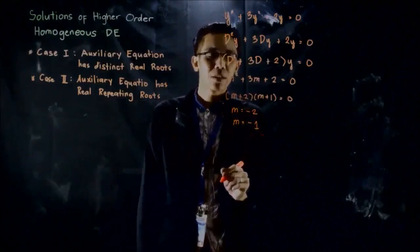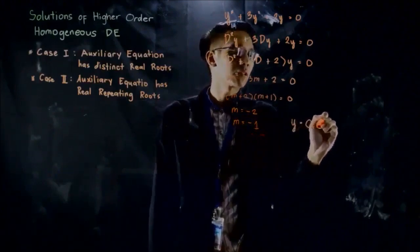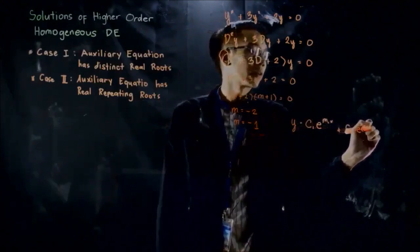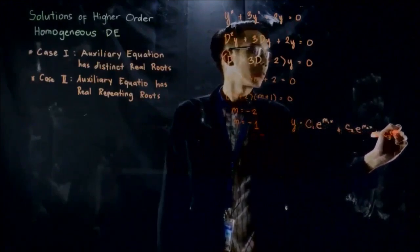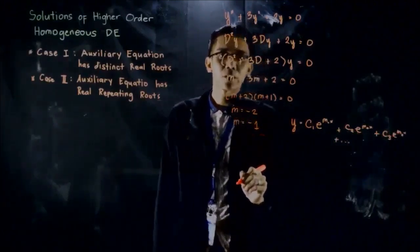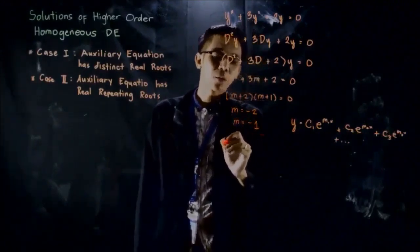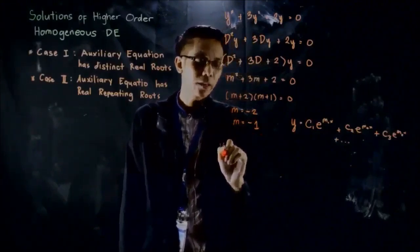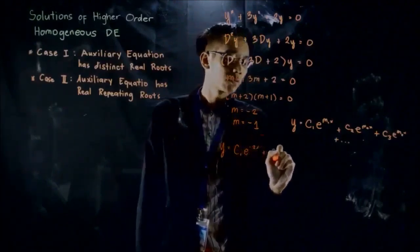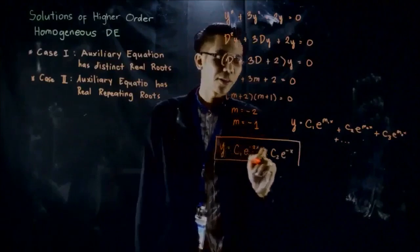For this kind of differential equation, the solution is given by the formula y equals c₁e^(m₁x) plus c₂e^(m₂x) plus c₃e^(m₃x), and so on. Since the given equation is of order 2, we only have two arbitrary constants. Our solution is y equals c₁e^(−2x) plus c₂e^(−x), and this is the solution of the given differential equation.